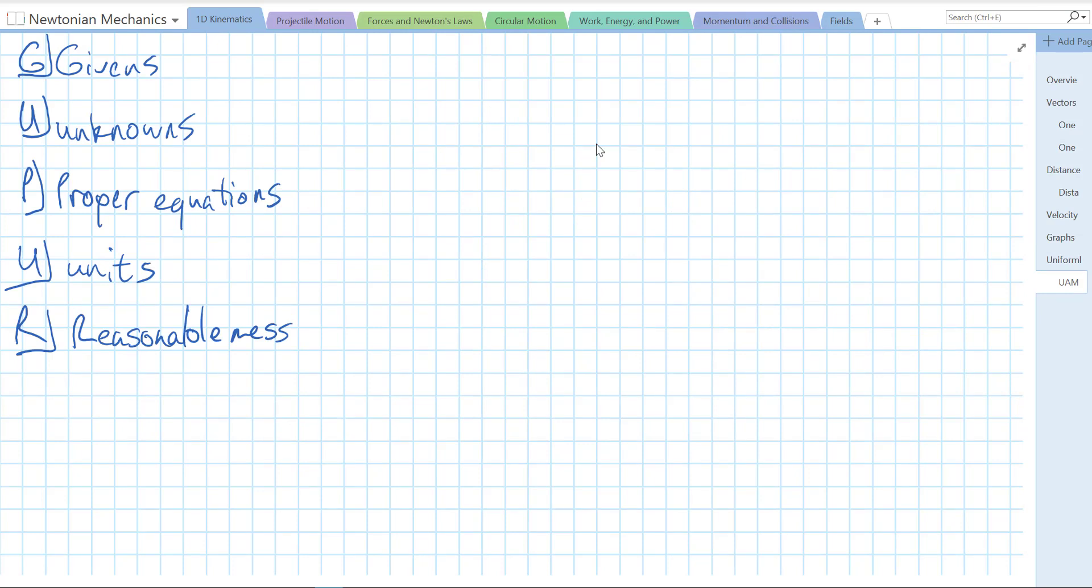This is a video in which I'm going to introduce a problem solving strategy that's going to be useful throughout all kinds of physics. And we're going to use it to solve one kinematics equation. It's called the GUPPER method because we break each problem into five sections. Givens, where you list the variables that you know. Unknowns, where you list the variables that you don't know. P is proper equations, where you write out your equations and solve them for your unknown variable. U is units, where we check our units. And R is reasonableness, does our answer make sense?